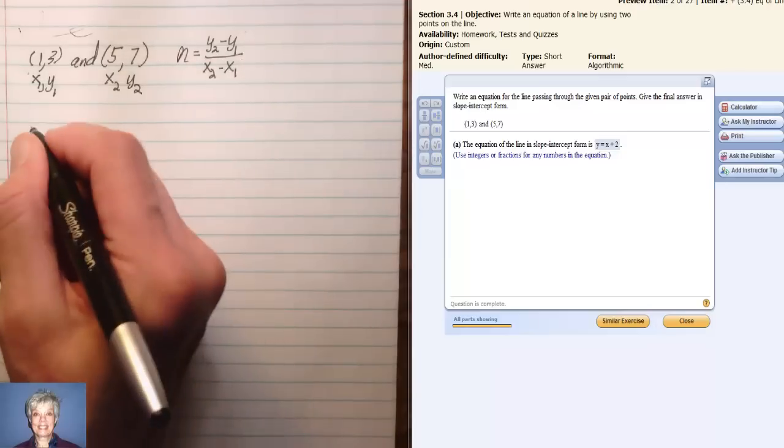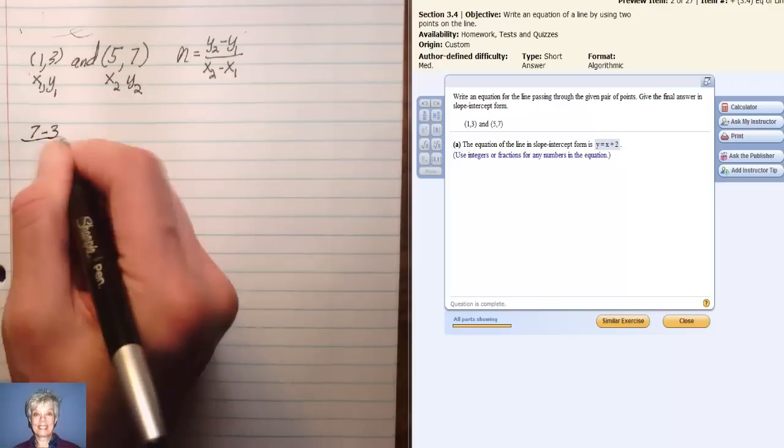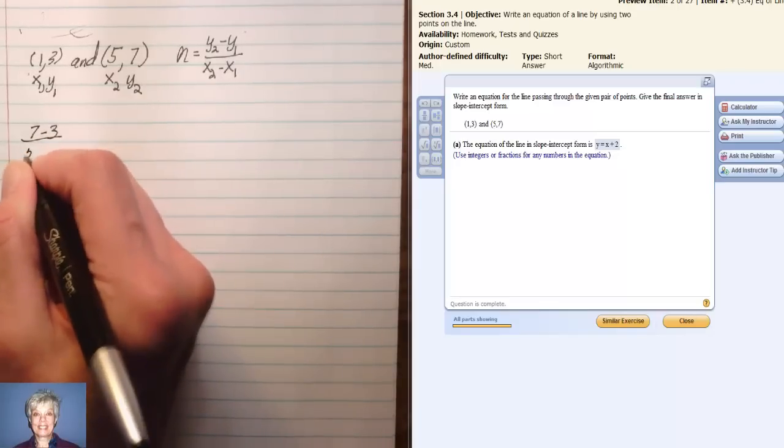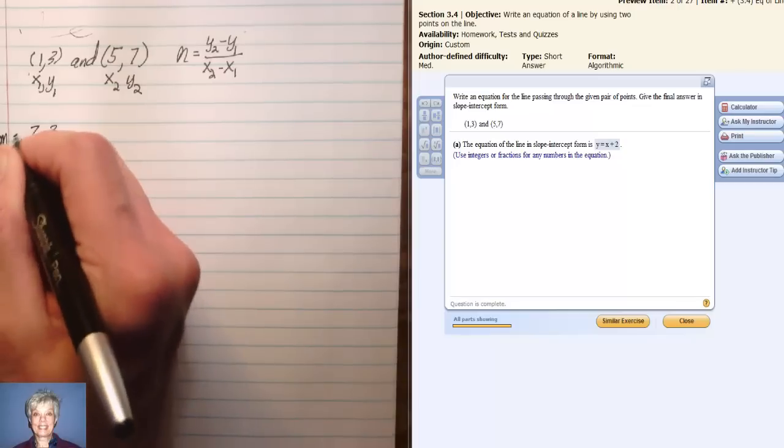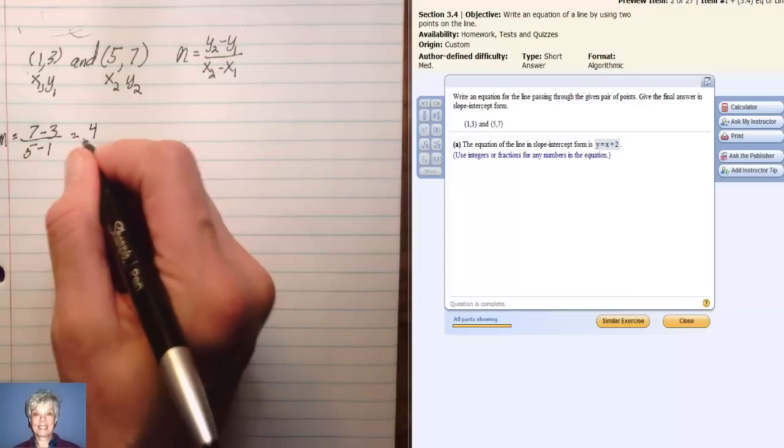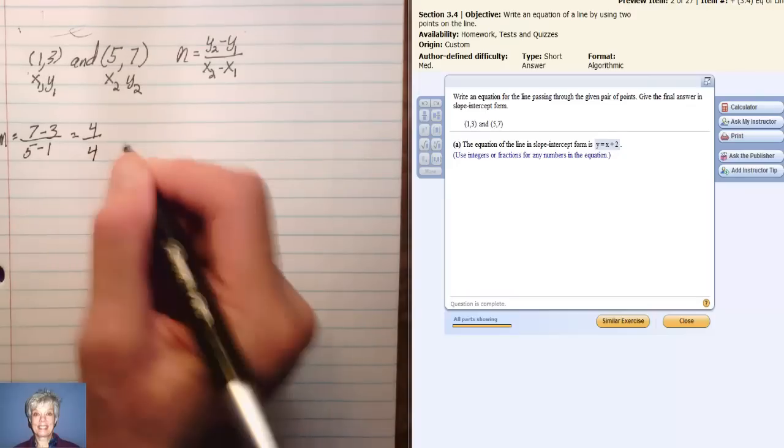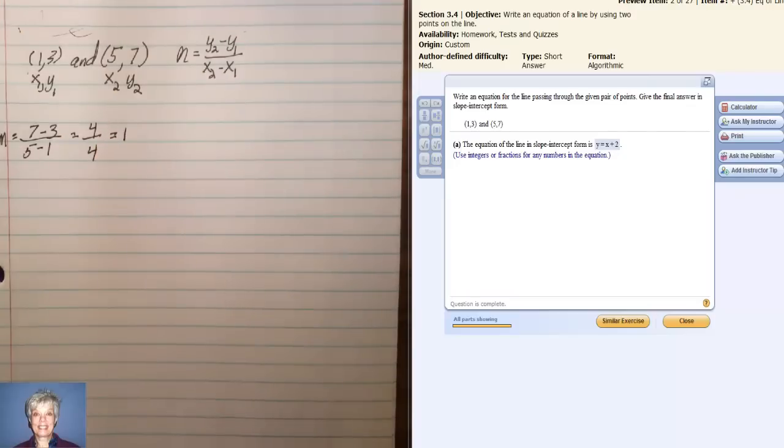So we'll have y₂ minus y₁ over x₂ minus x₁, and that's m equals. Alright, so 7 minus 3 is 4, and 5 minus 1 is 4, and 4 over 4 is 1. So our slope is positive 1.